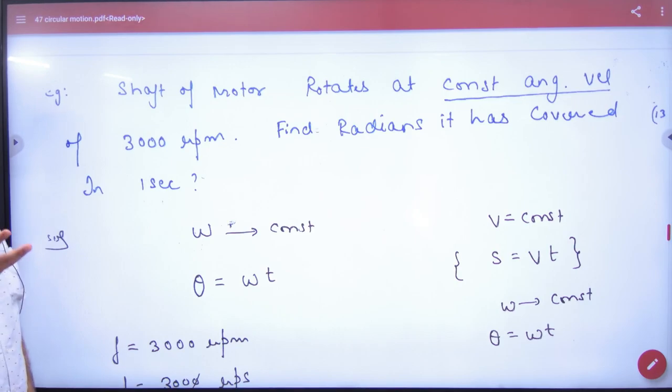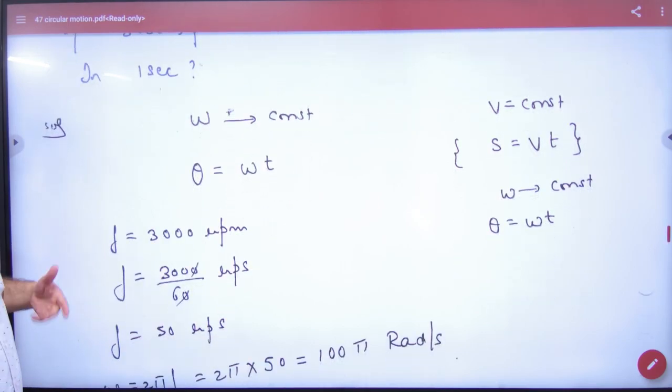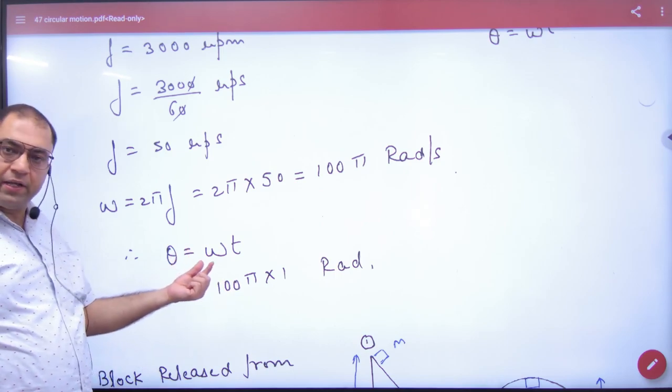What do you have given in this question? Find radians it has covered. It means theta is given. Because the velocity is constant, the equation is applied: theta is omega t. You have to find theta in this question.